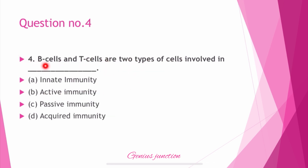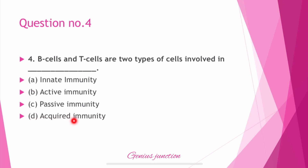Question number 4: B cells and T cells are types of cells involved in? Options are: innate immunity, active immunity, passive immunity, and acquired immunity. The right answer is D — acquired immunity. B cells and T cells are types of acquired immunity.